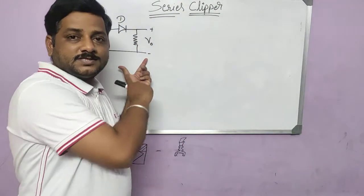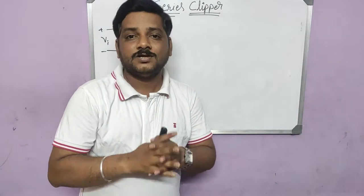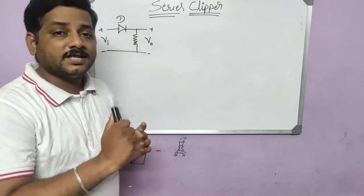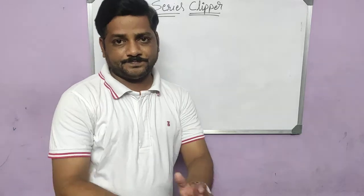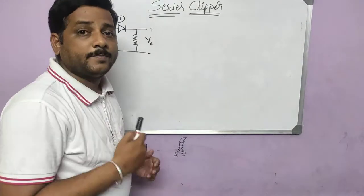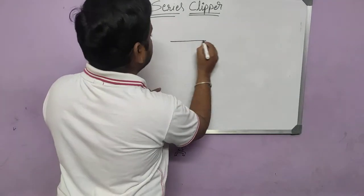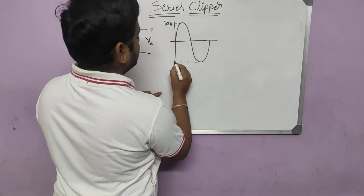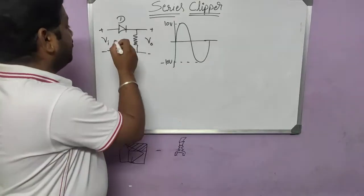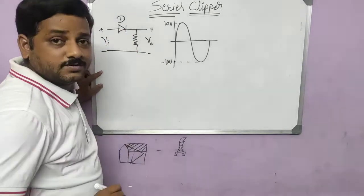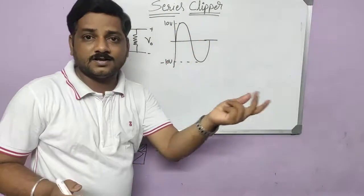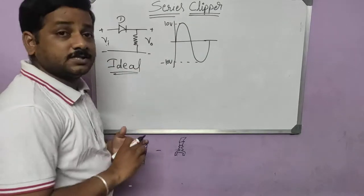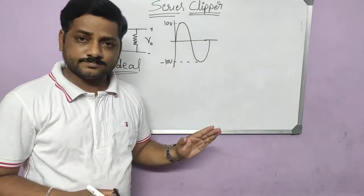Have a look at the simple series circuit drawn here. I am going to explain with this simple circuit so you can understand the concept. A diode is connected in series to the supply voltage — then it is called a series circuit or a series clipper. Now let us see how this is going to operate. We consider the input as a sine waveform, with magnitude 10V and minus 10V. The input supply is given to the anode terminal of the diode, and from the cathode we take the output. Let us consider this diode as ideal — it does not have any losses.